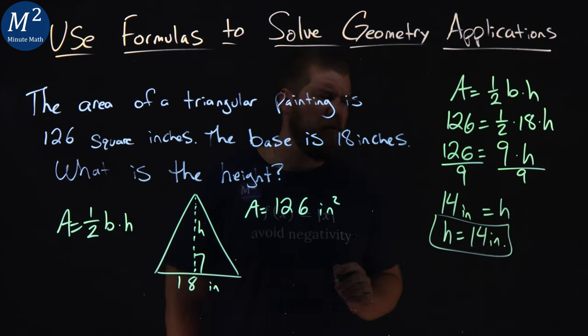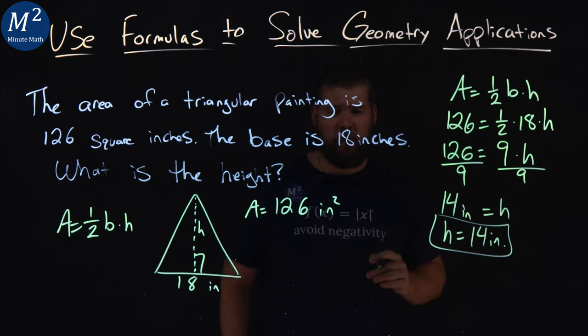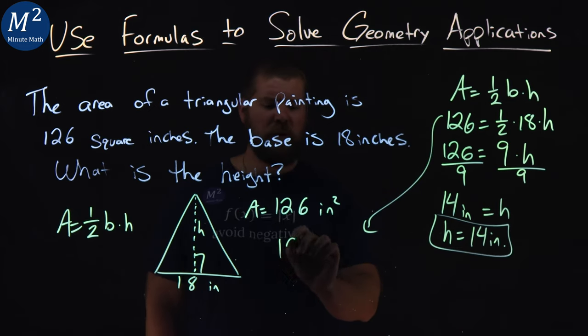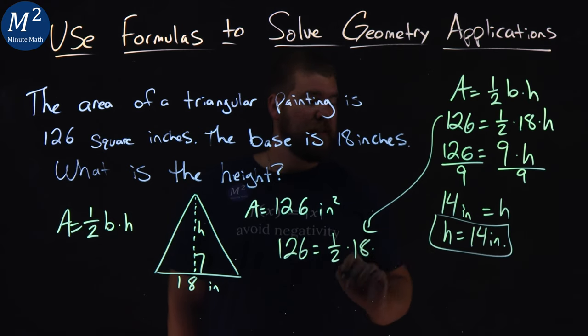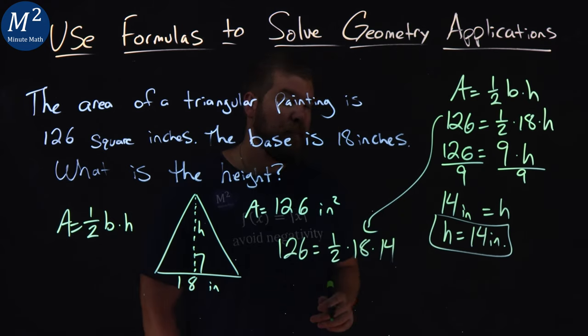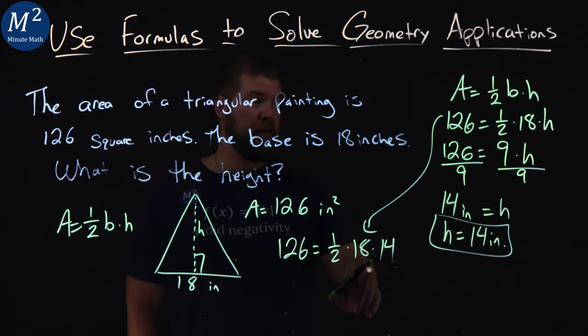That was pretty quick, but I'll do a quick check to make sure we got it right. I'm going to rewrite my formula here. 126 equals one-half times 18 times 14. I'm going to see if the left-hand side equals the right-hand side.